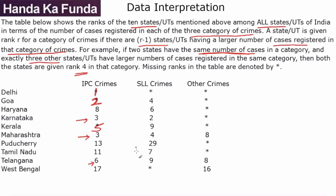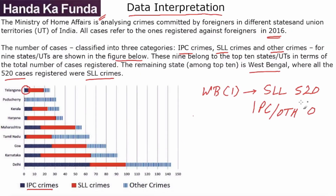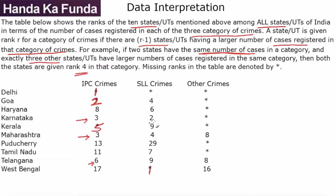Let's see if we can do that for SLL as well. In SLL, rank 1 is very clearly West Bengal because West Bengal had 520 cases — the biggest SLL crime count in India since no one else is even close to 520. Number 2 is Karnataka, then Goa is at rank 4.